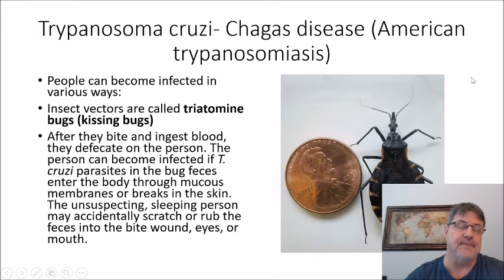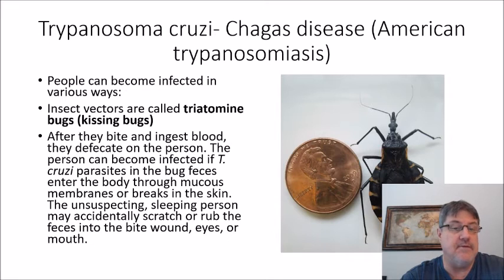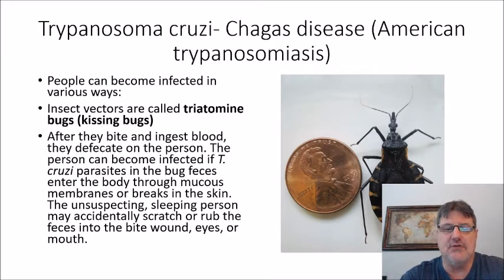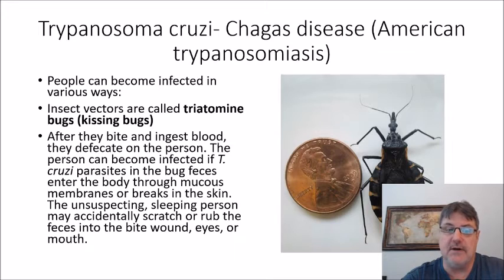So that was African trypanosomiasis. There's another trypanosome called Trypanosoma cruzi, and this is the agent that causes Chagas disease, or American trypanosomiasis. People can become infected in various ways. The insect vector is the most common way to get Chagas disease — that's the triatomine bugs, a group of bugs whose nickname most people are familiar with: the kissing bugs. After they bite and ingest blood, they defecate on the person, and the person can become infected with T. cruzi found in the bug feces.